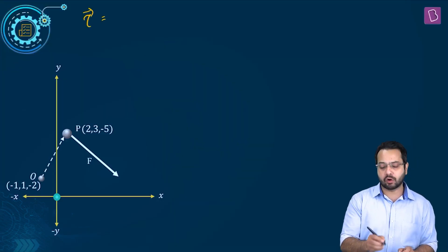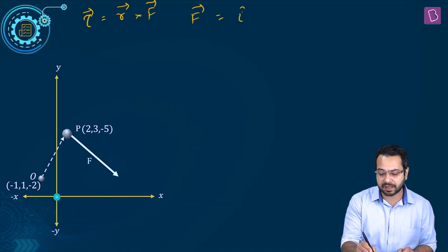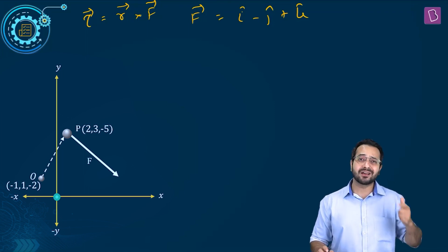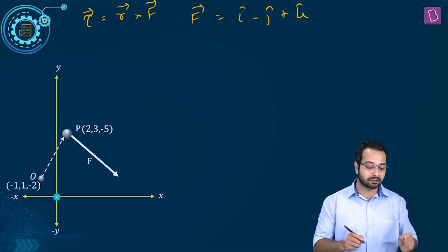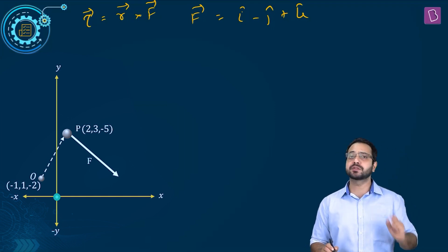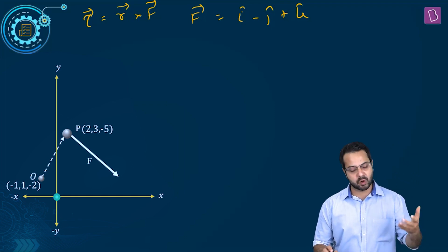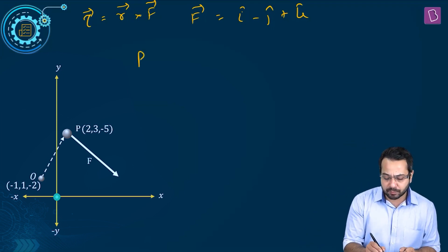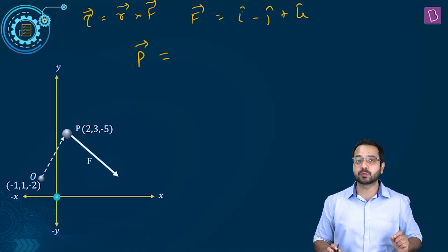We know that torque equals R cross F, and F is already known as i minus j plus k Newton. So the job is to find R. R is the vector which joins the point about which the torque has to be calculated to the point at which the force is applied. So vector OP is going to be my R vector.